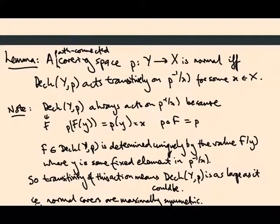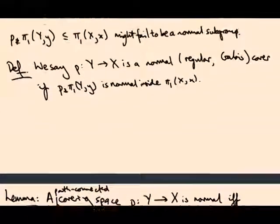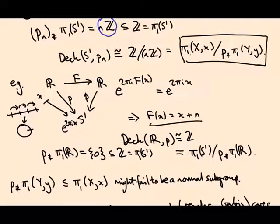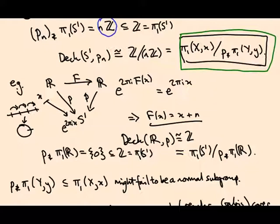In the next video we will see what to write instead of this for the deck group when p★ π₁(y) is not a normal subgroup — there's still a formula you can write down, and we'll see and prove that next time.